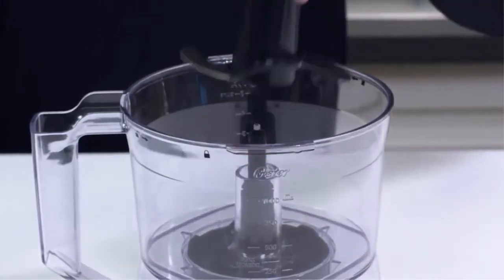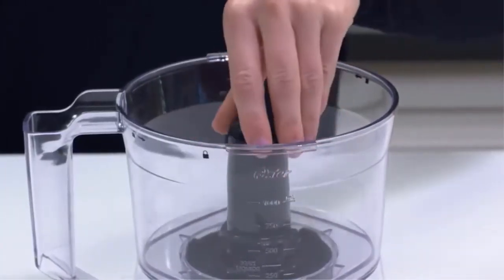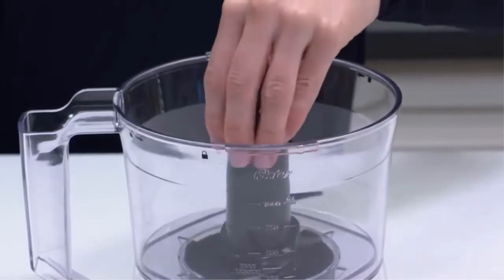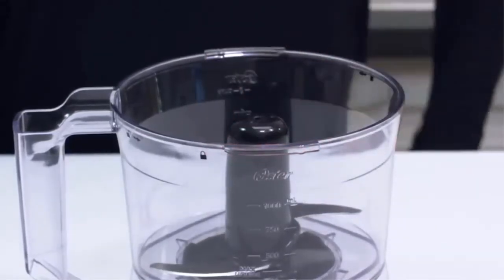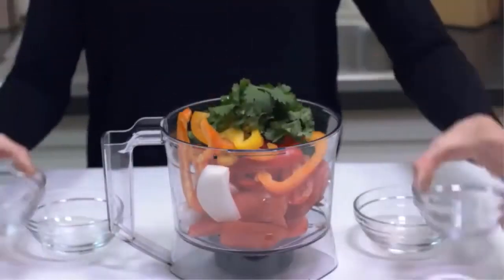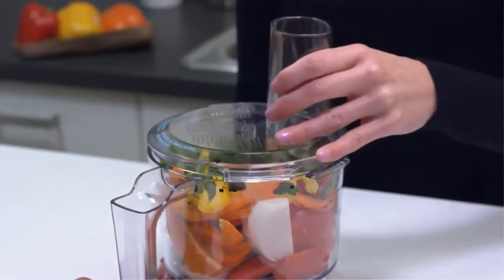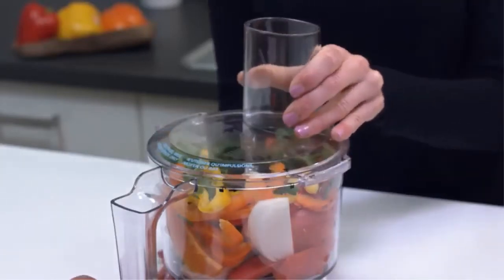Place it over the post and rotate to make sure it is seated onto the post as far as it will go. Fill with your ingredients and place the cover on the bowl by pressing down and turning counterclockwise until it locks in place.